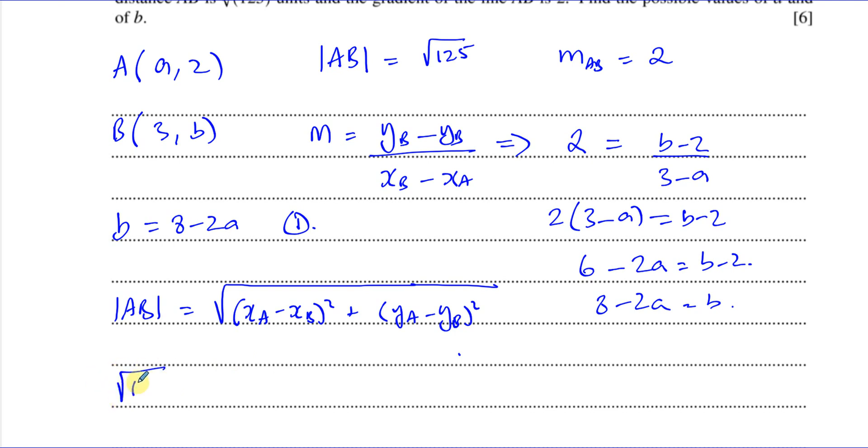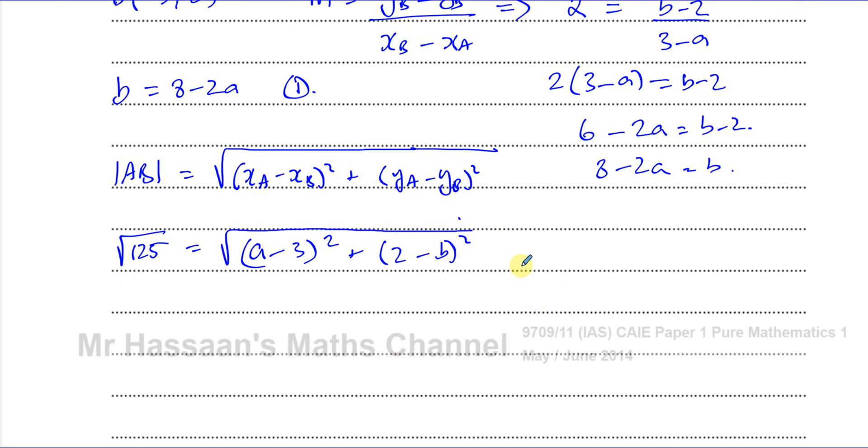So the square root of 125 is equal to the square root of (a minus 3) squared plus (2 minus b) squared. If I square both sides to get rid of the square root, I'll get 125 equals (a minus 3) squared plus (2 minus b) squared.